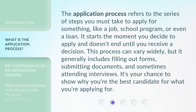The application process refers to the series of steps you must take to apply for something, like a job, school program, or even a loan. It starts the moment you decide to apply and doesn't end until you receive a decision. This process can vary widely, but it generally includes filling out forms, submitting documents, and sometimes attending interviews. It's your chance to show why you're the best candidate for what you're applying for.